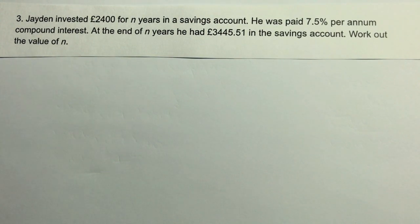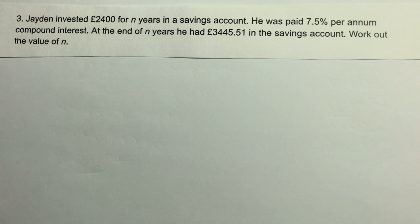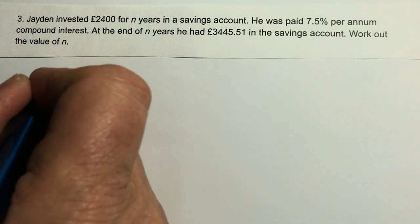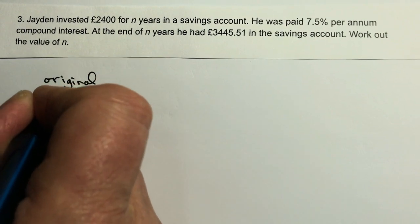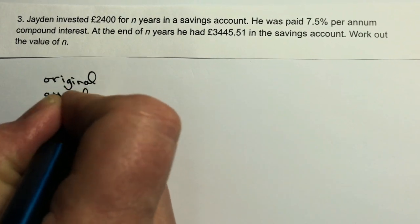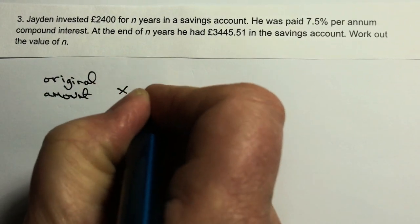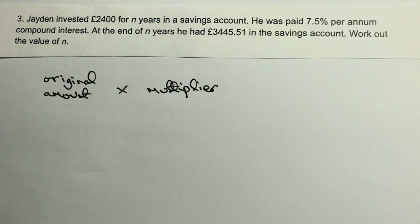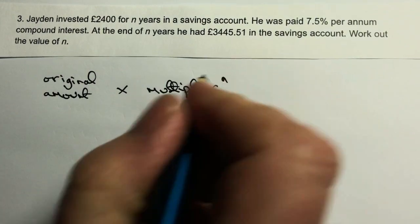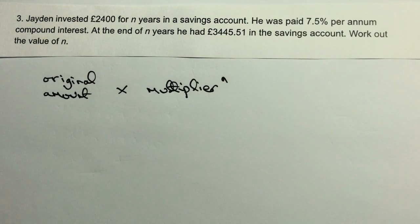In this video we're going to be looking at questions that involve compound interest. The easiest way of dealing with this is by using the formula: original amount multiplied by the multiplier, raised to the power of N, which is the number of years — and that's what the question is asking us to find.